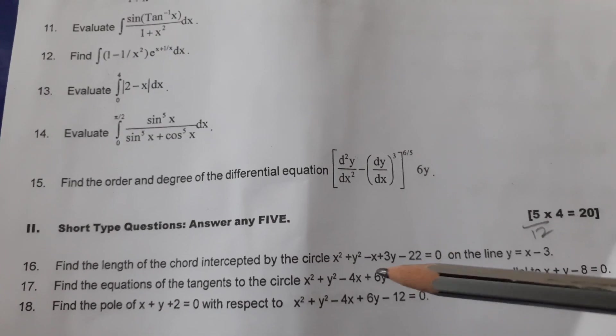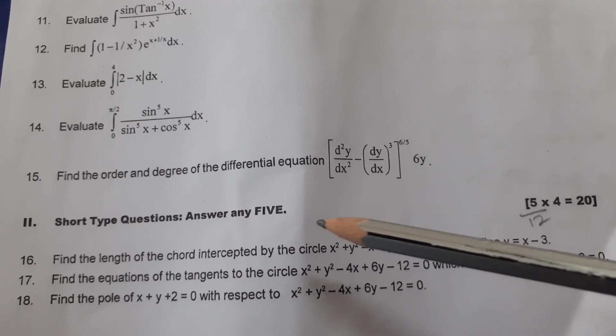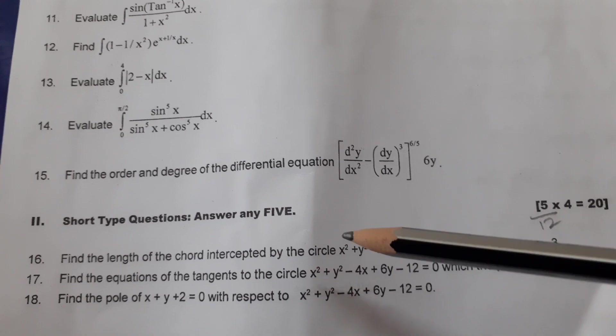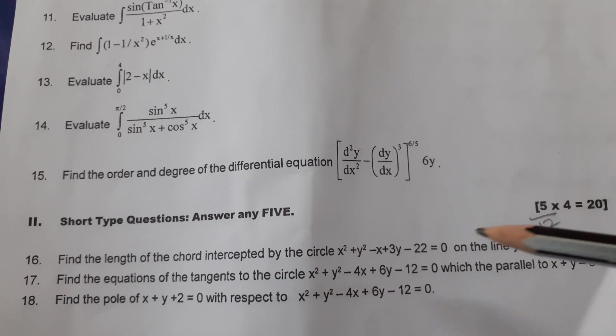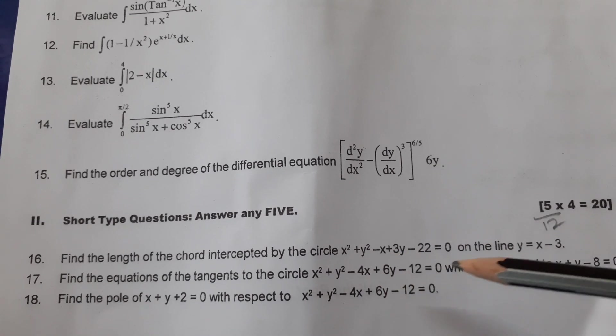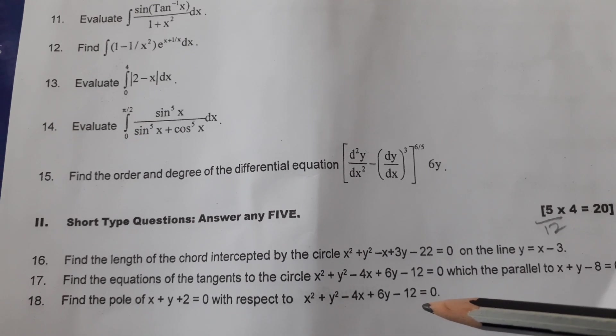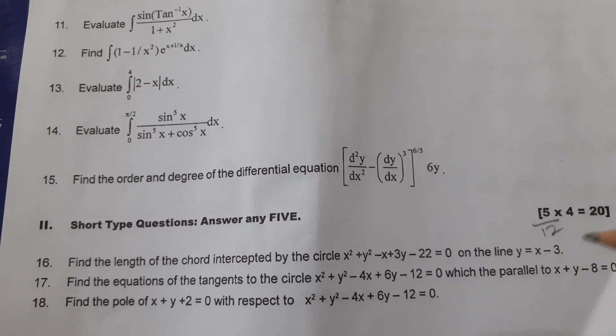Now, come to the second part, SAQs. How many SAQs? 12. 12 SAQs are given. Only 5, any 5 we have to answer. Only 5. So each one carries 4 marks. 5 4s are 20 marks. So make a note of these SAQs.